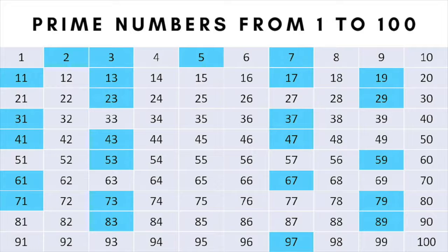The first ten of them are 2, 3, 5, 7, 11, 13, 17, 19, 23 and 29.